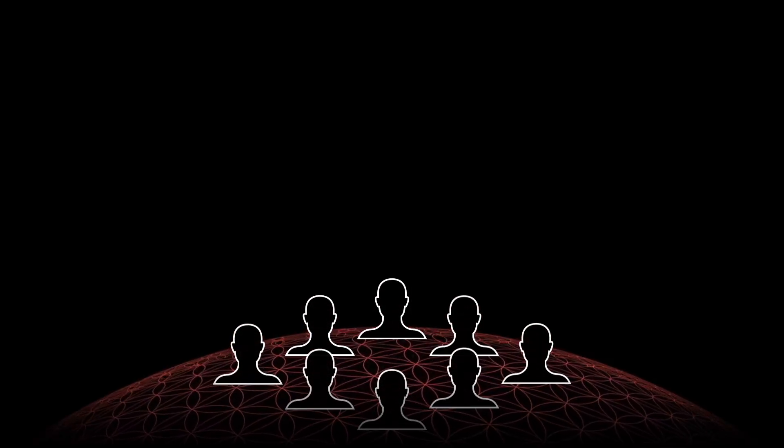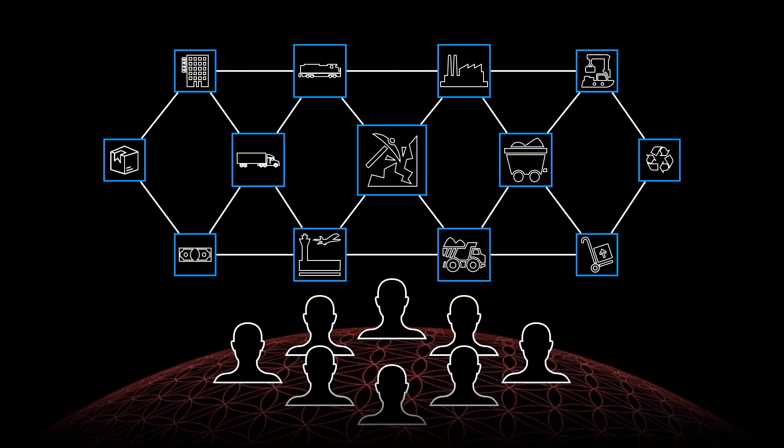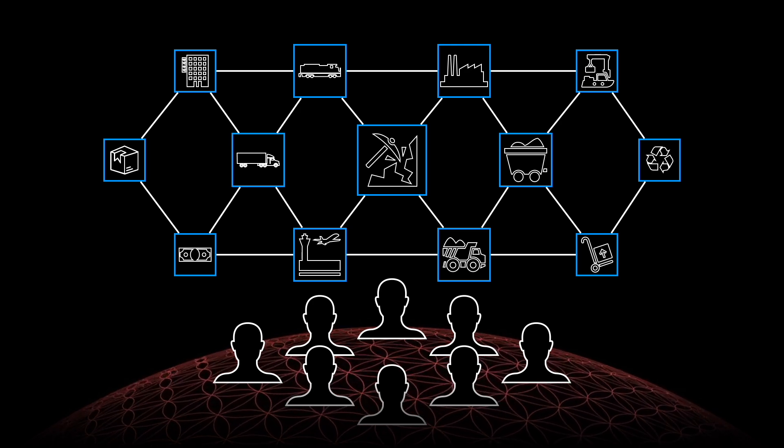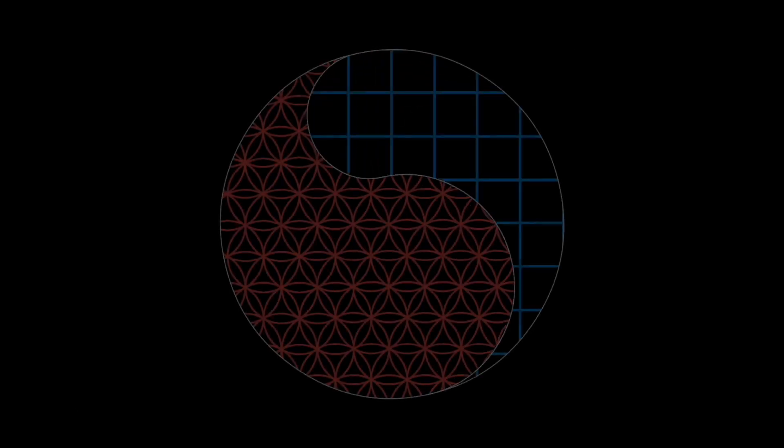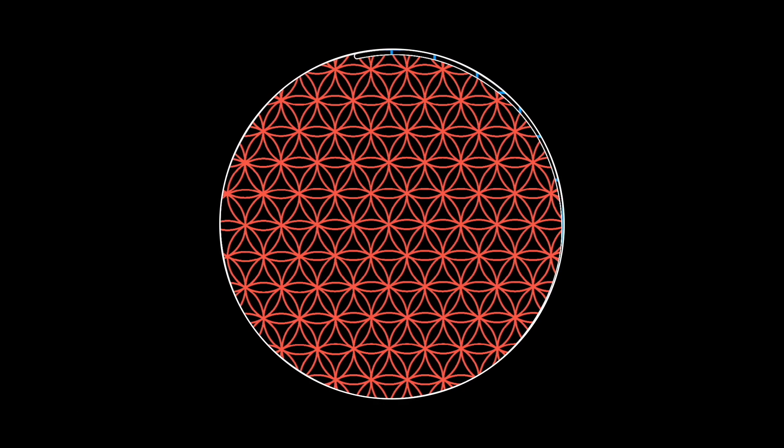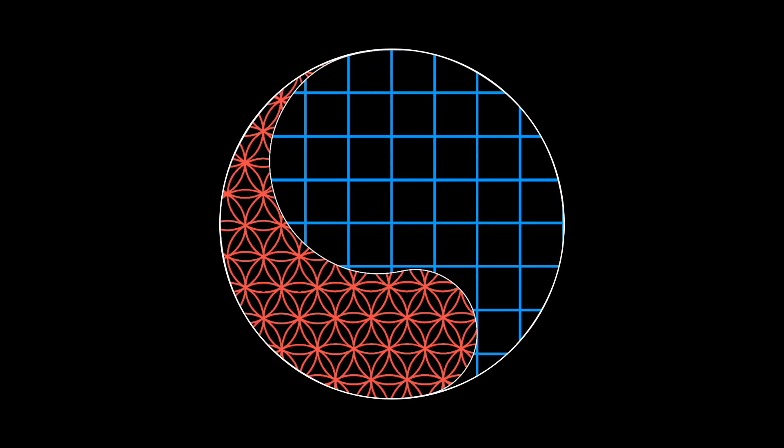Because of this, complicated systems can only ever exist as an extension of a complex system. Complicated supply chains, for example, are fundamentally developed, maintained and operated by complex human collectives. In this sense, these two domains are fundamentally asymmetric. The complex can exist without the complicated, but the complicated is predicated on the complex.